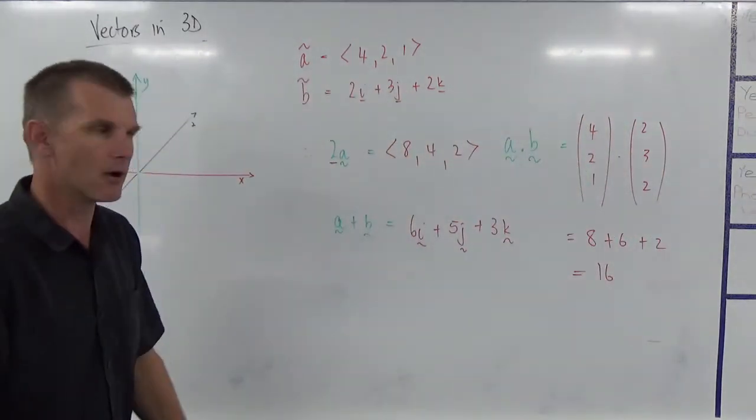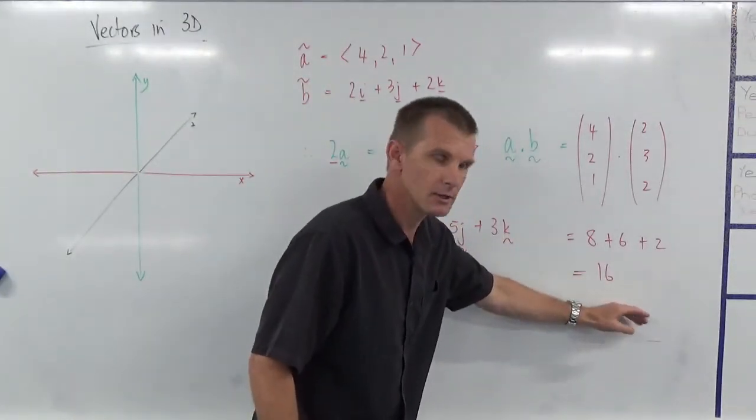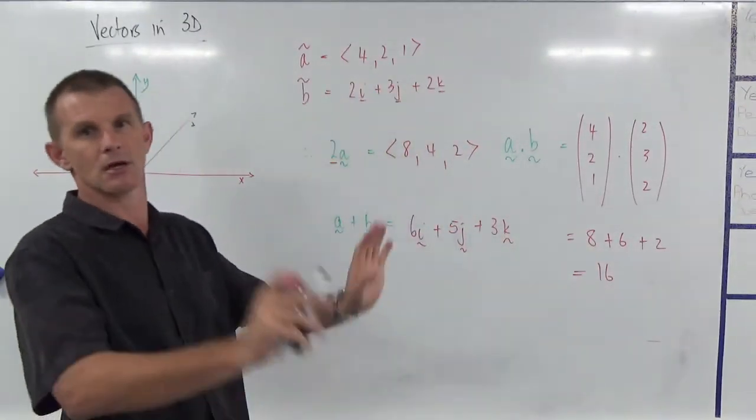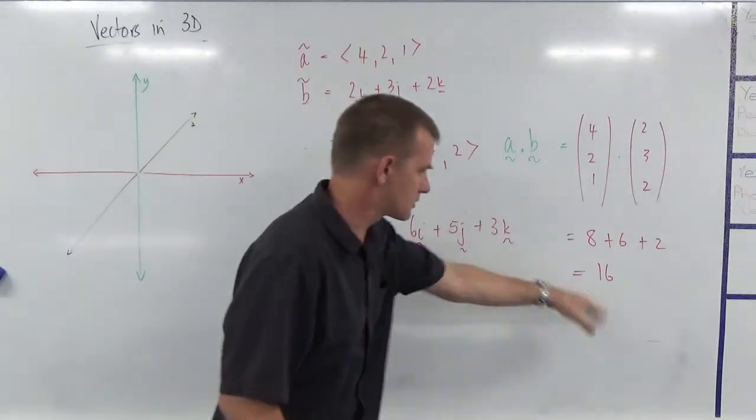There's my answer. Now remember, it's a scalar product. So that's why it's just a number. There's no IJK going on. There's just a number.